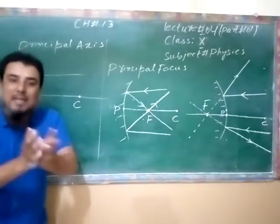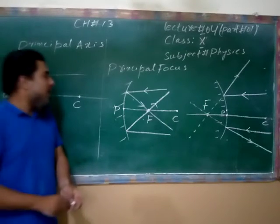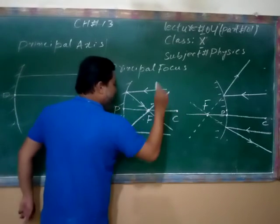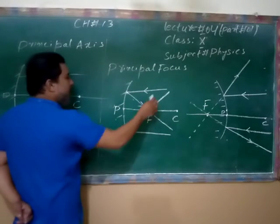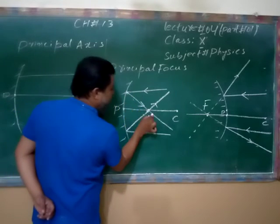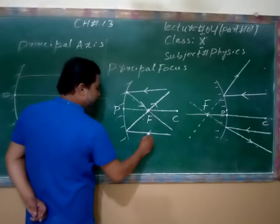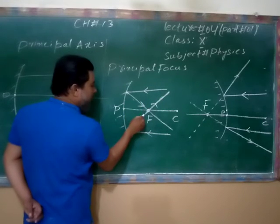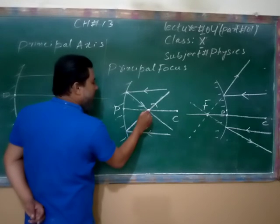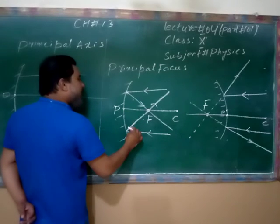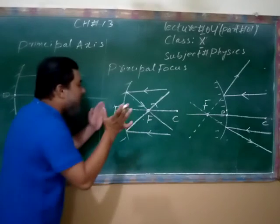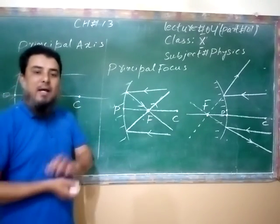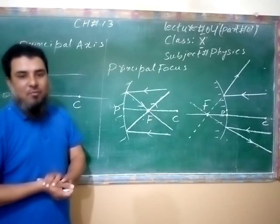For a concave mirror, the pole is marked as O and the center of curvature is also shown. When rays parallel to the principal axis hit the concave mirror, they are reflected and all converge at a single point on the principal axis. This point where all reflected rays converge after reflection is called the principal focus.